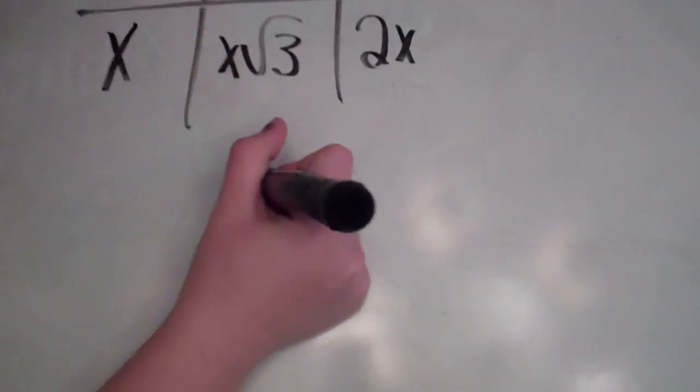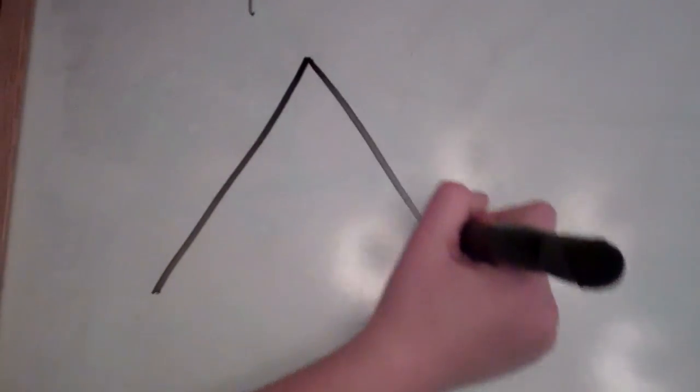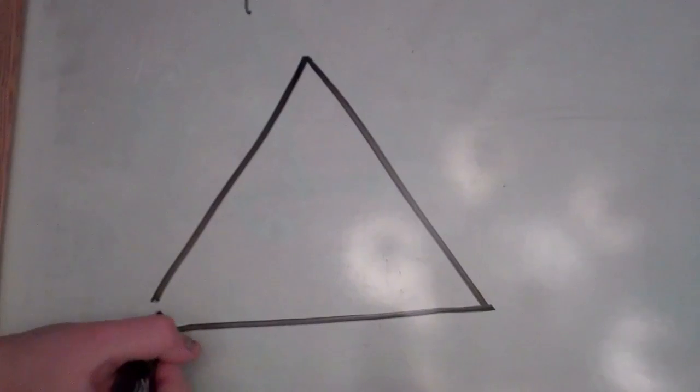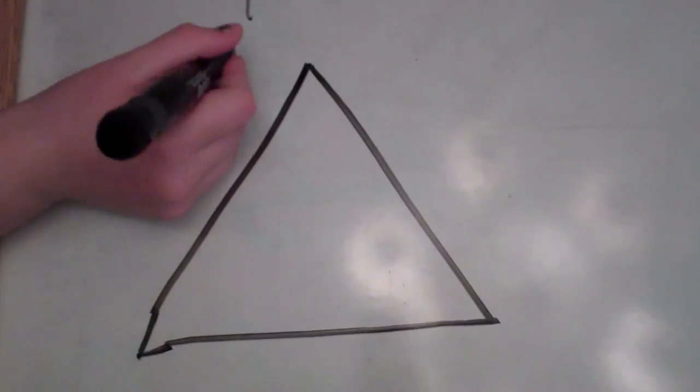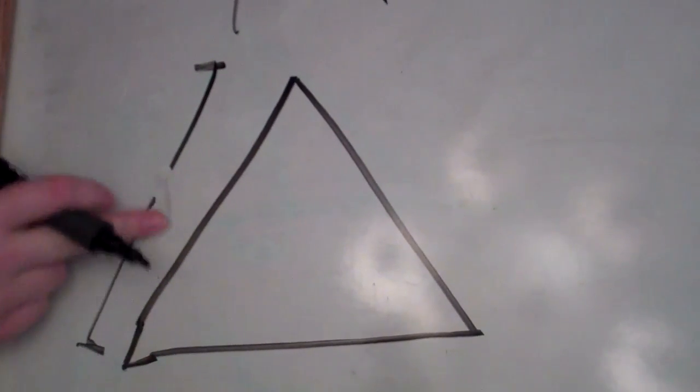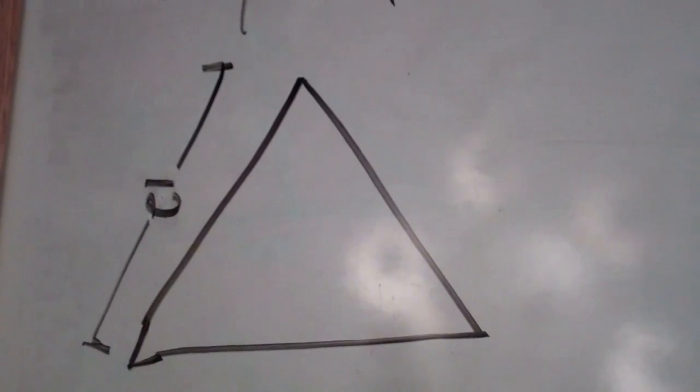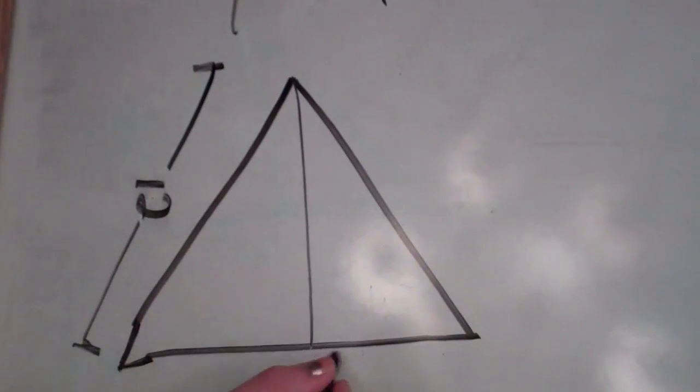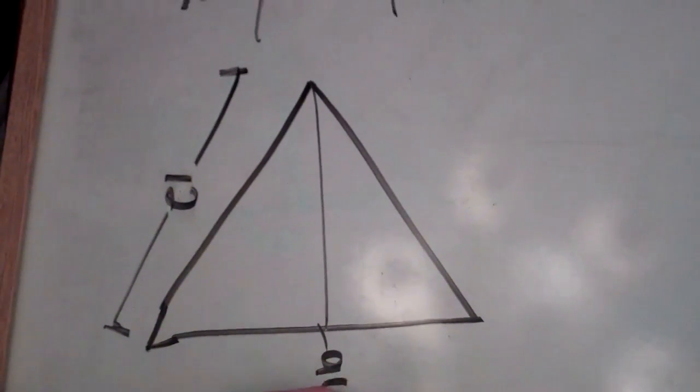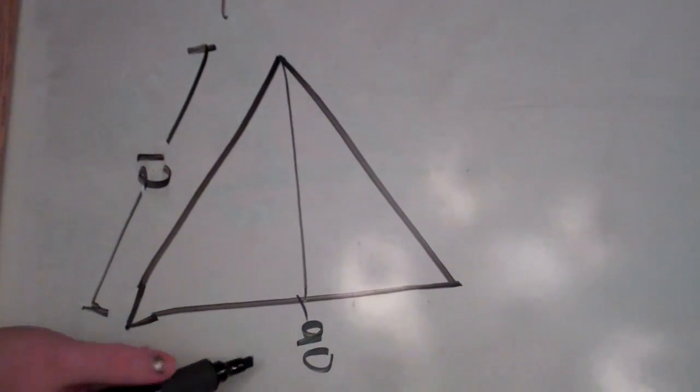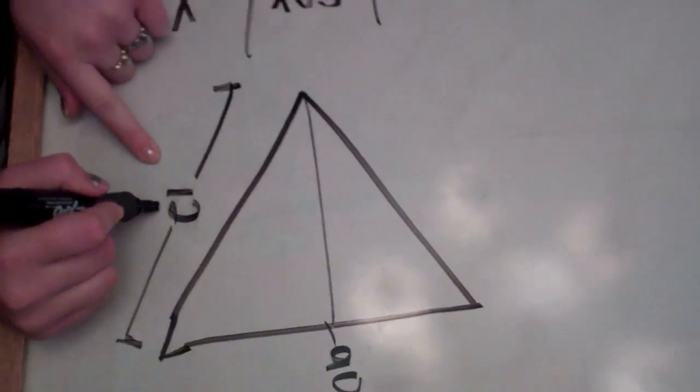So, in our triangle, with our side being 12, we have our 90 degree angle. Across from our 90 degree angle is 2x, which is 12.